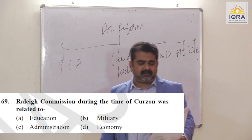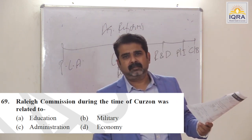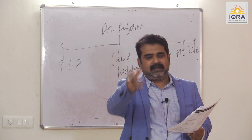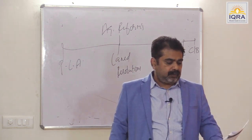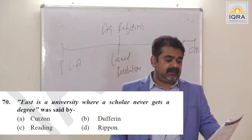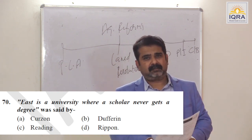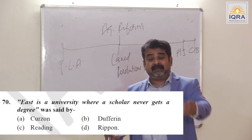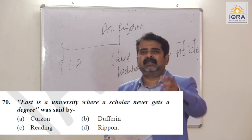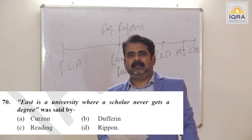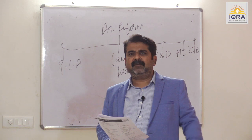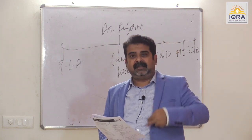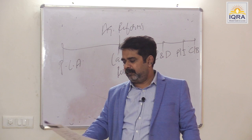Raleigh Commission during the time of Curzon was related to education — 1902 Raleigh Commission, and on its recommendation the University Act of 1904 was passed. Answer is A. 'East is a university where a scholar never gets a degree' was said by Curzon — he was influenced by the Sufi saints and spiritual knowledge of this country. He was a man who also said 'India is a country of jugglers,' but when he saw the cultural diversity, Sufis, and spiritual achievement of India, he said: 'East is a university where a scholar never gets a degree.' Answer is A.